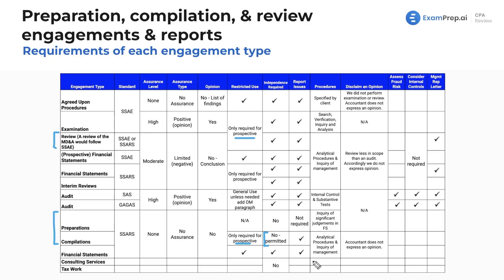Regarding reporting issues in the engagement: in preparations it's not formally required, but you should just be a good practitioner and report them. For compilations and reviews, you'll report issues found. In reviews and audits, you're actively looking for issues. For procedures: reviews use analytical procedures and inquiries of management; preparations involve inquiry of significant judgments; compilations can use analytical procedures and inquiries of management, though much lighter than in reviews.